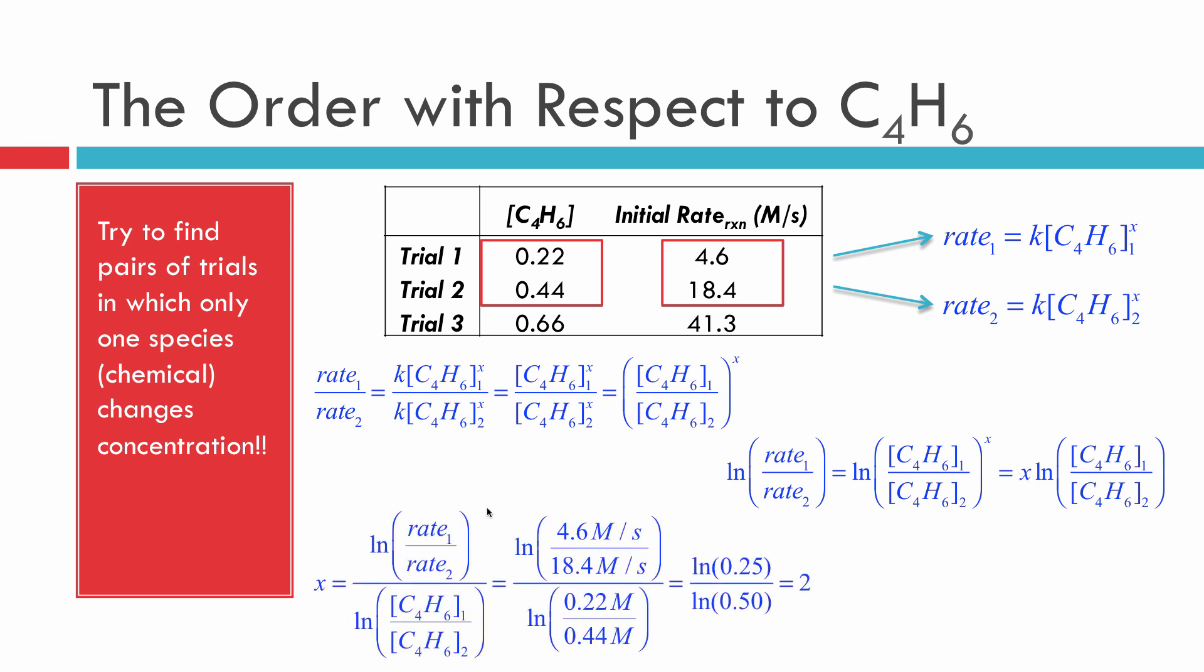The end result is something where I can rearrange this to solve for X. If you take a look at this, this very initial left-hand side where it says the order is equal to the natural log of the ratio of the rates divided by the natural log of the ratio of the concentrations is how we solve every one of these problems. In the other video, I talk more about that, but just keep in mind that you can skip all these steps and go directly to a relationship that looks like this one that I'm circling right now.